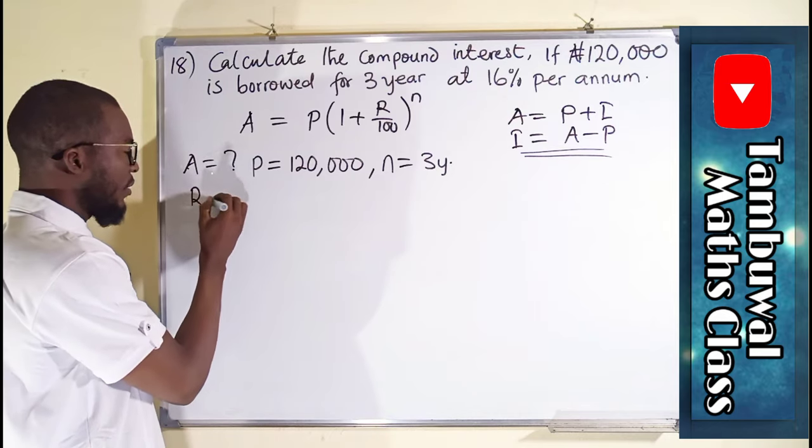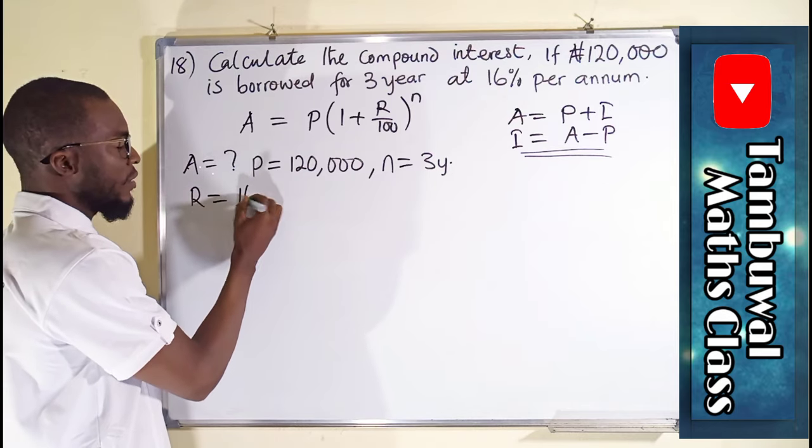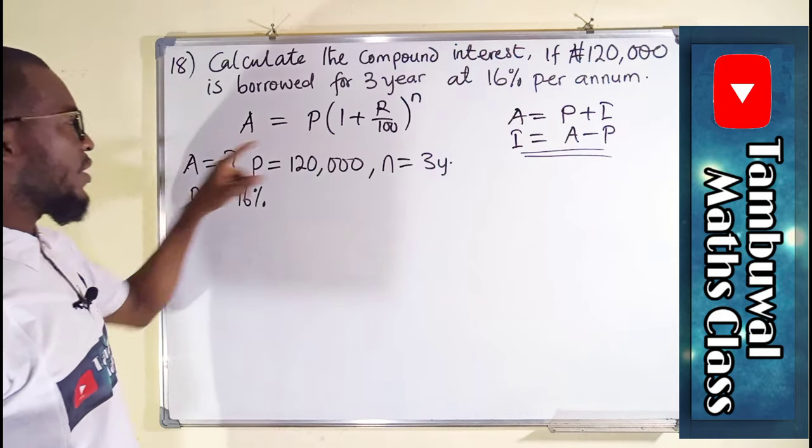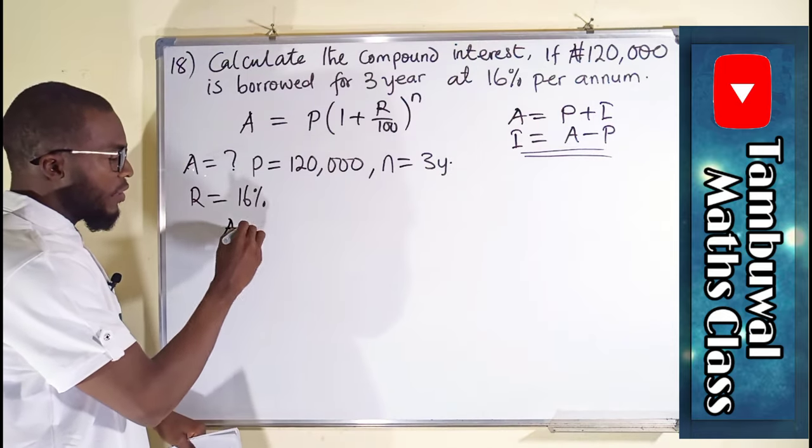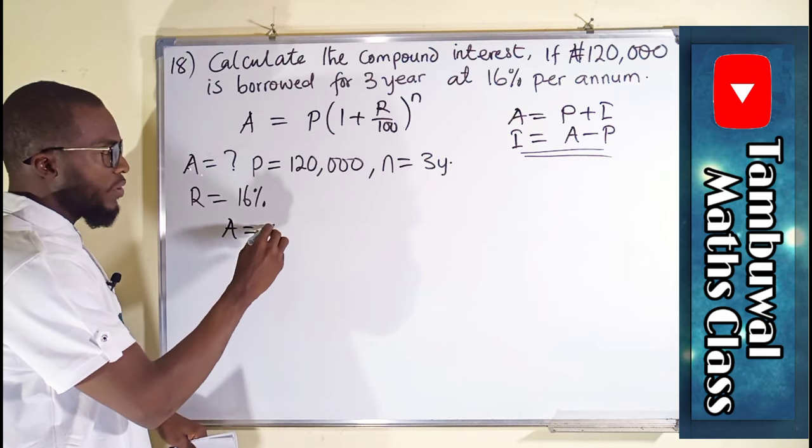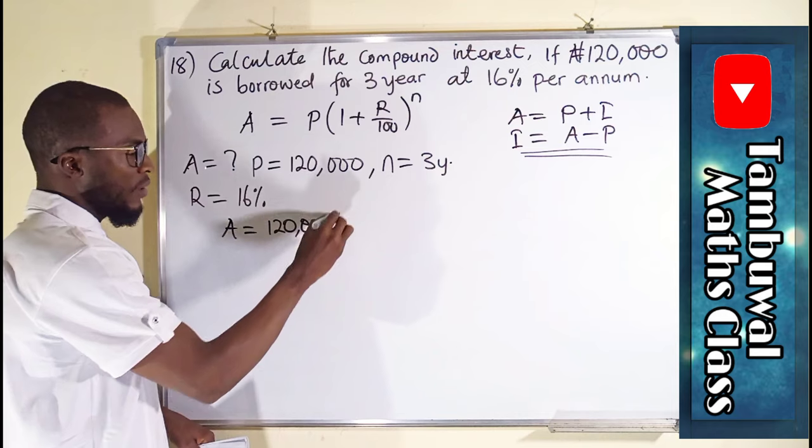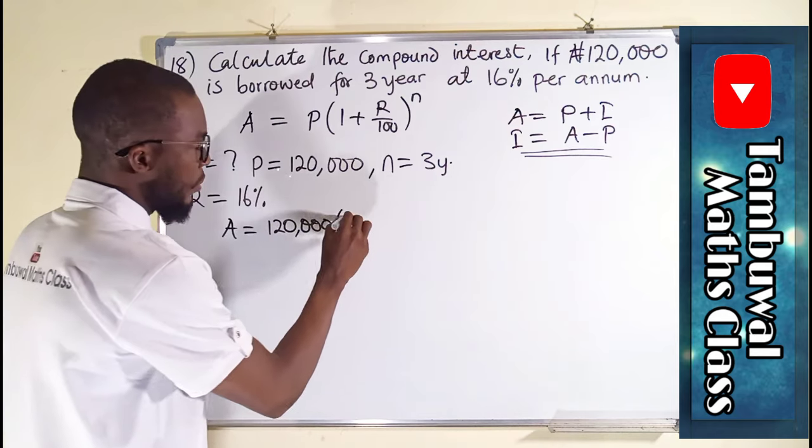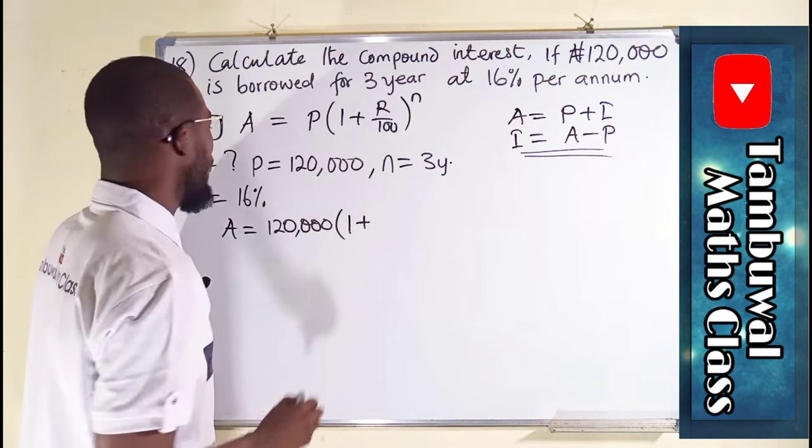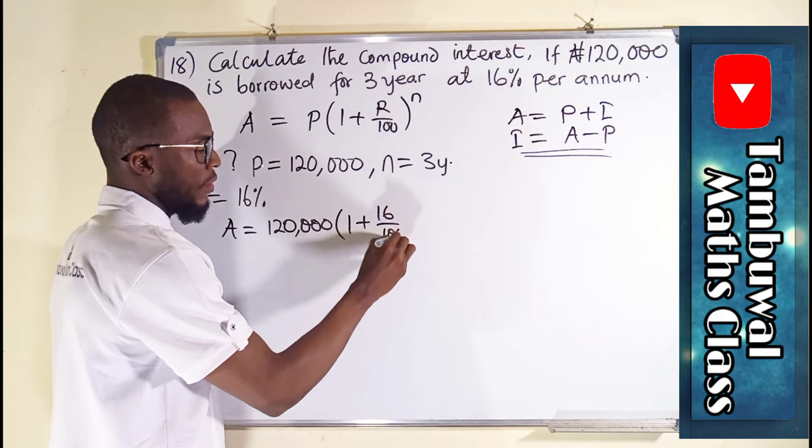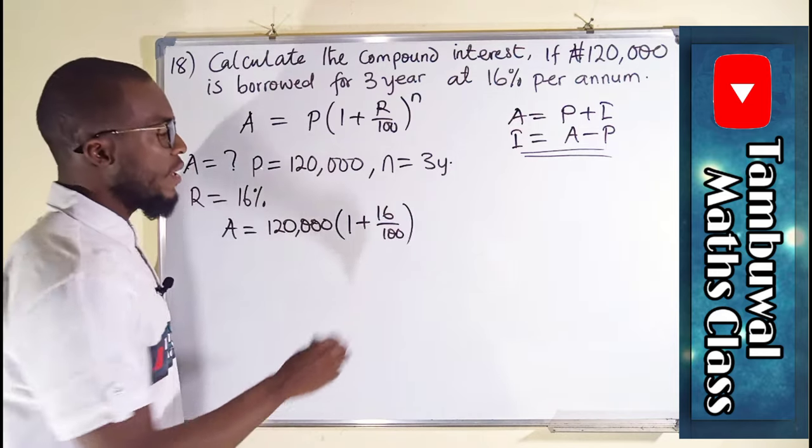So now let us substitute this information here. It will now be equal to the principal, which is 120,000 multiplied by 1 plus our rate is 16%. And our n is 3.